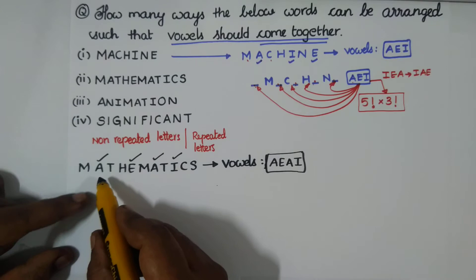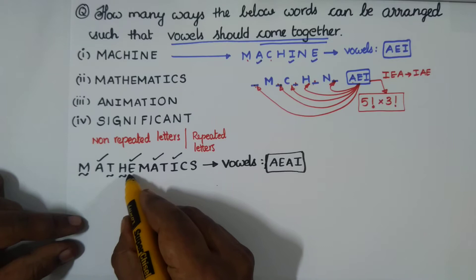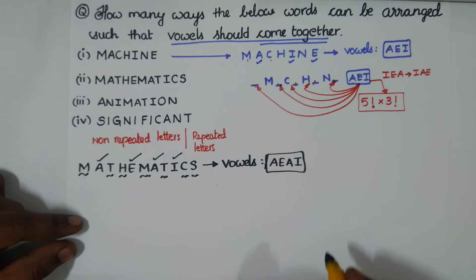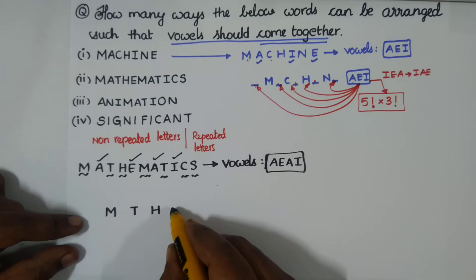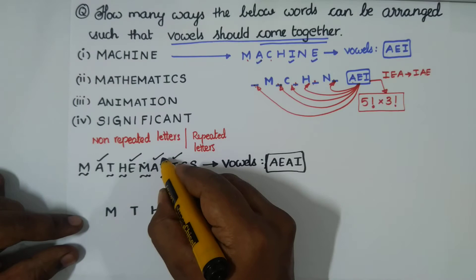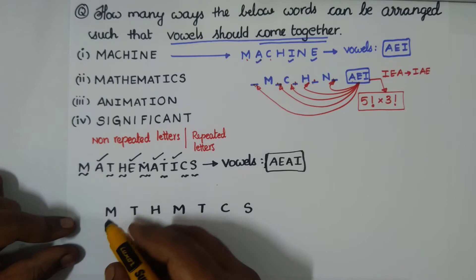Now segregate the vowel group A, E, A, I from MATHEMATICS. The remaining consonants are M, T, H, M, T, C — let's write them out: M, T, H, M, T, C.